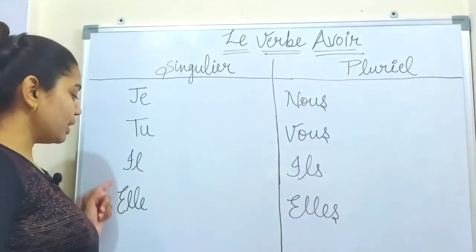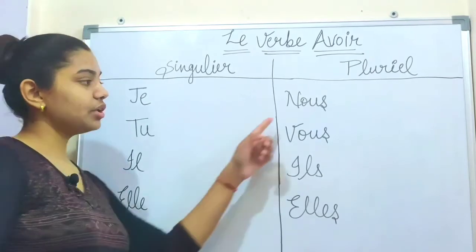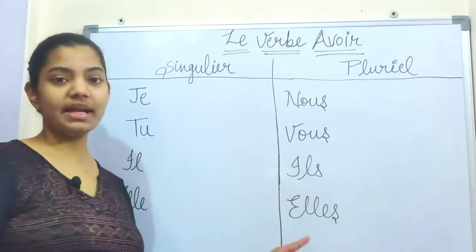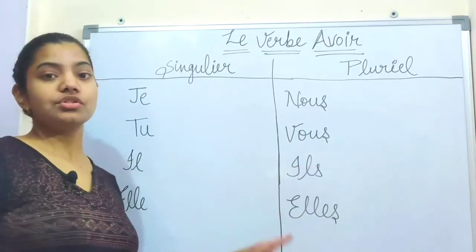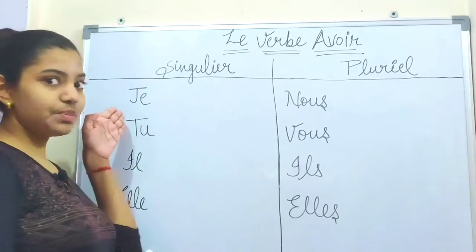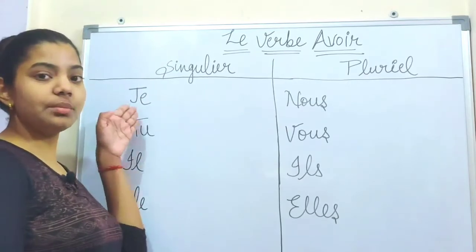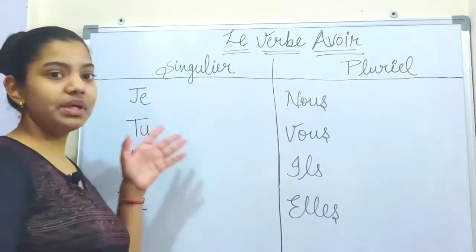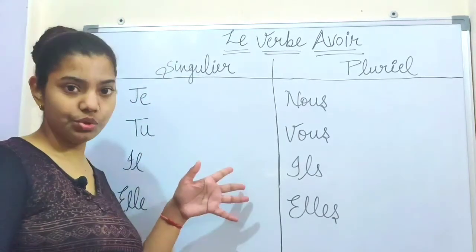The subject pronouns are: je, tu, il, elle — and nous, vous, ils, and elles. Je means 'I', and tu means 'you'.